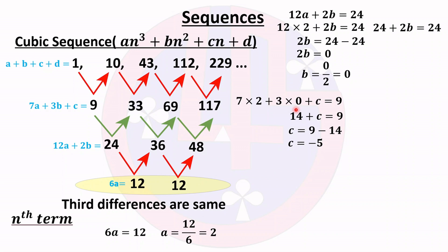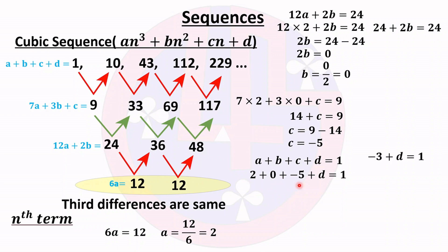Now we have a, b, and c. To find d, we use the fourth equation: a + b + c + d = 1. Substituting the values and simplifying gives −3 + d = 1, so d = 4.